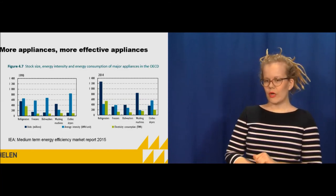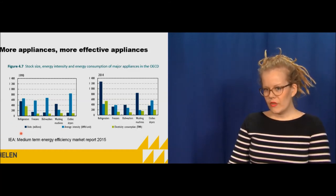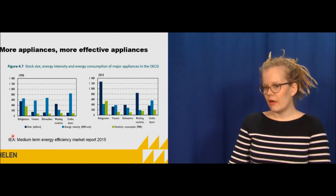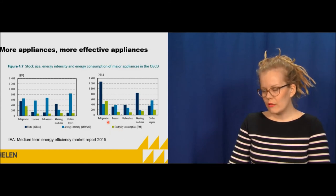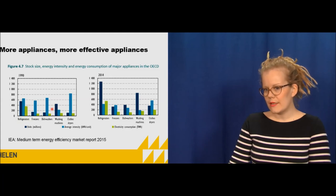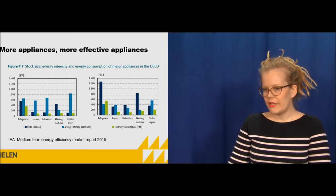This picture shows how regulation has affected energy use. In 1990 there were fewer appliances than there are now, but electricity consumption — the green line — hasn't increased that much. For example, we have more than double the amount of fridges nowadays, but still energy consumption has increased maybe only 50%. This is all made possible because the new appliances are more efficient.